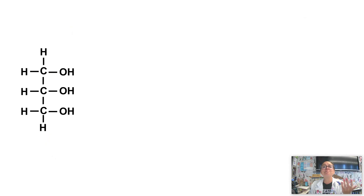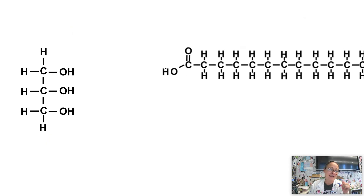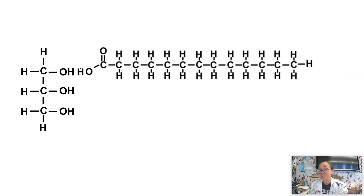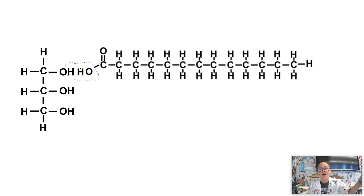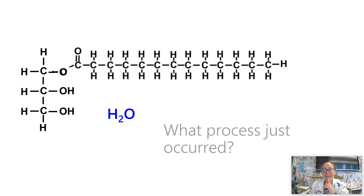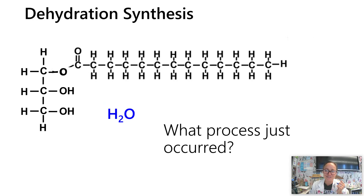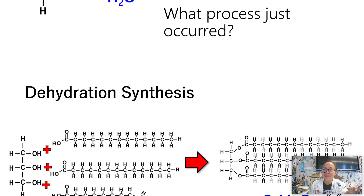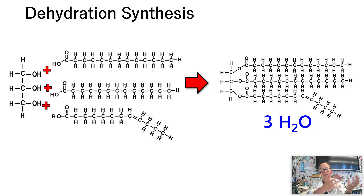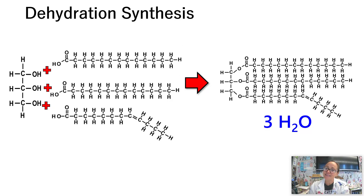How do we build a triglyceride? Here we have the glycerol, and then here comes a fatty acid chain. Just like we saw in an earlier topic, probably 1.3, we can remove a water to form a covalent bond. That process is dehydration synthesis. In the production of a triglyceride, we would have three waters removed to build those covalent bonds linking the fatty acid chains to the glycerol.